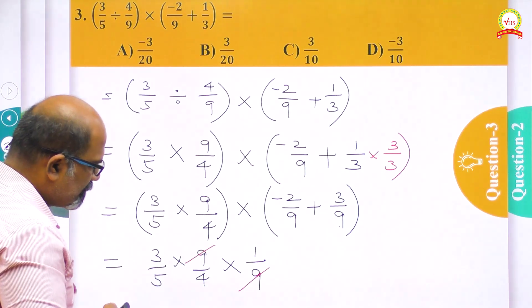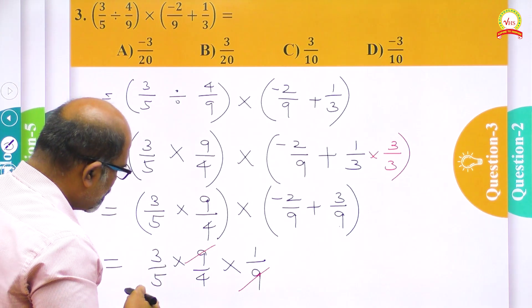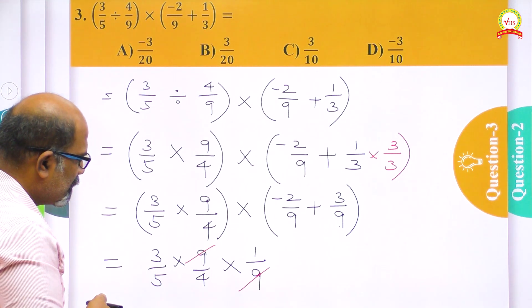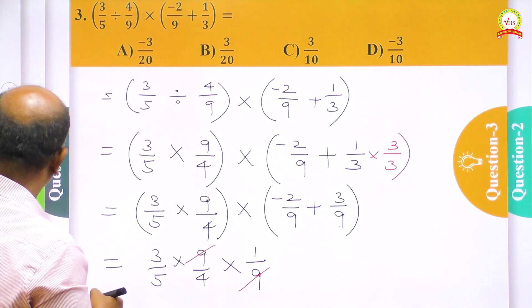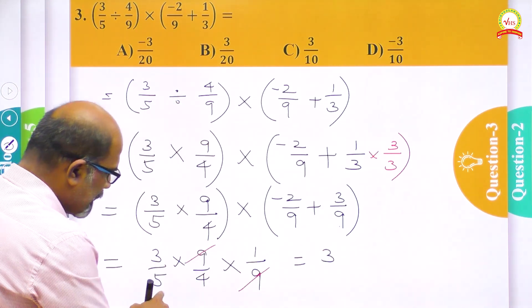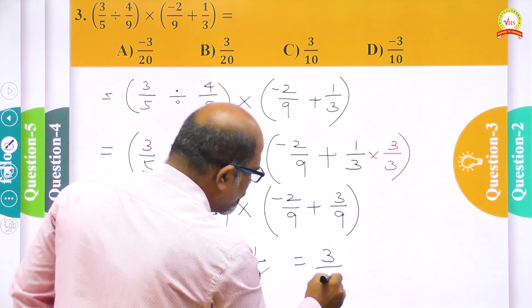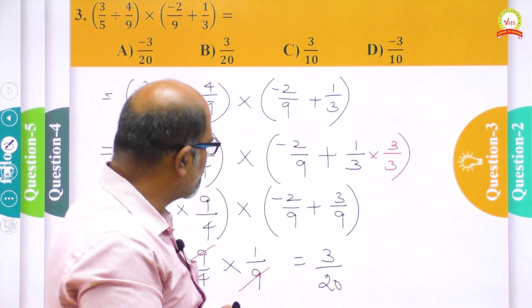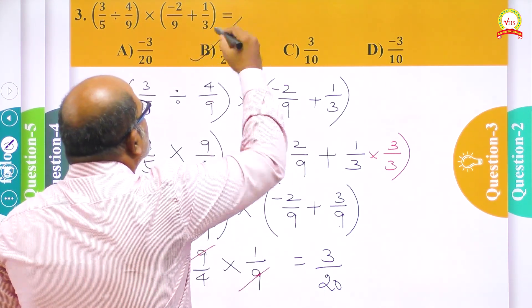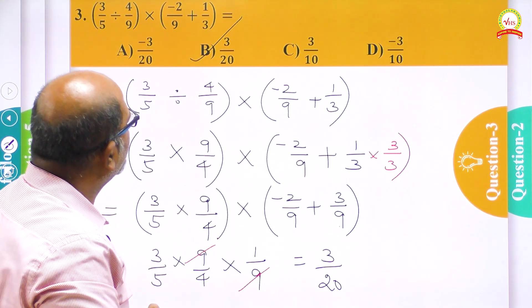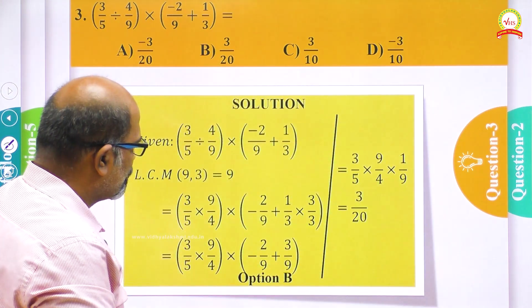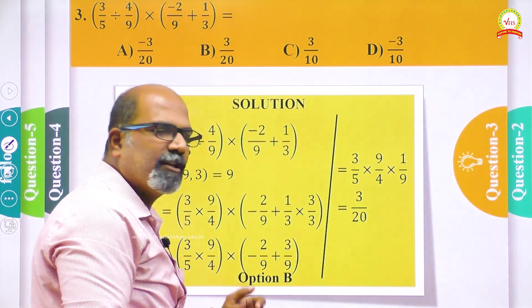In this we can make some cancellation work — this 9 and 9 cancel. No other common factors are available. On simplification we get 3 ones are 3 in the numerator and 5 fours are 20 in the denominator. So 3/20 is the answer for this question. We have option B and let us check — yes, 3/20 is the correct answer and it is option B.